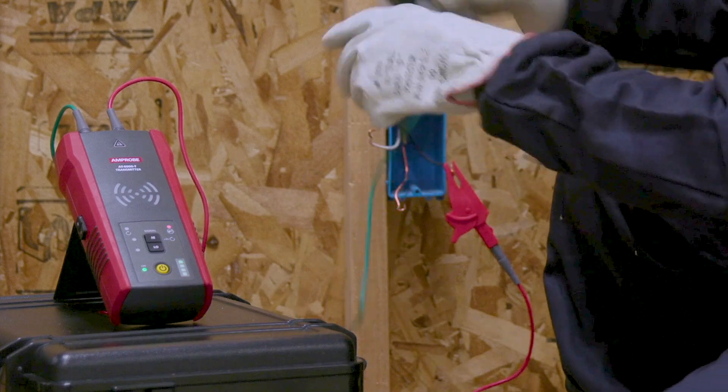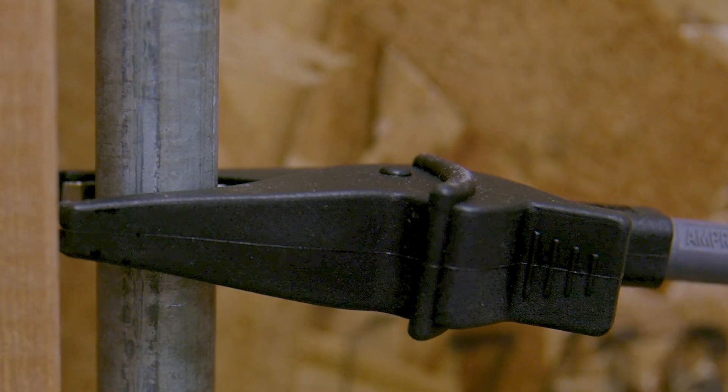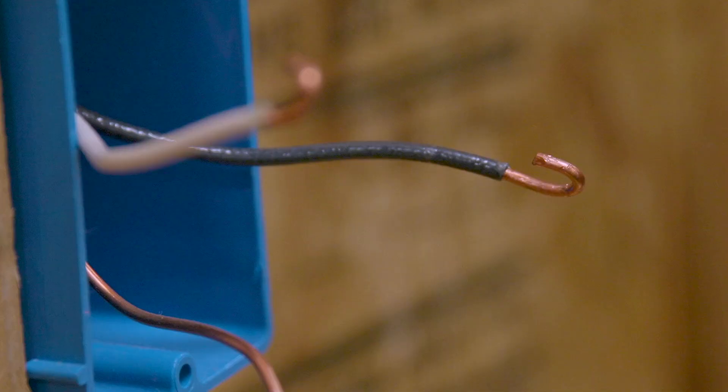Connect the green lead to a separate ground to avoid signal coupling. The red LED indicates proper connection of the test leads to the energized line. Push the high button to induce the tracing signal.